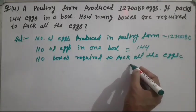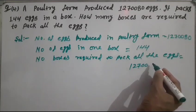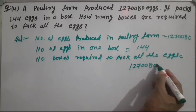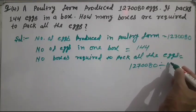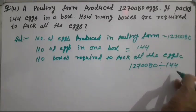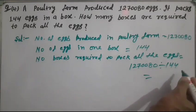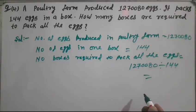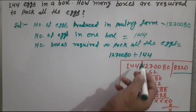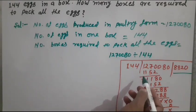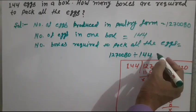We need to divide 1,270,080 by 144. When we divide it, we have to look at this. This is 8,820.